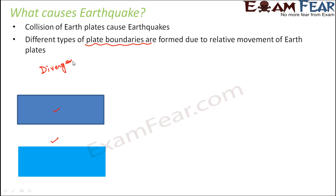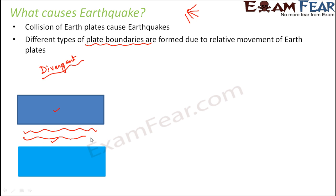The word divergent means something which starts from one point and then spreads out. Here also, the two plates are spreading away from each other. When the two plates are separating out, this can lead to the formation of a new ocean basin. This basin can expand and finally the plate area can increase, resulting in shallow earthquakes as a result of a divergent plate boundary.